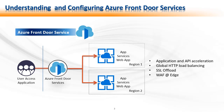If you look at the picture, when a user accesses the application, it goes to Azure Front Door Services and there it is decided which region the request should be routed to. We have two regions with App Services Web Apps — Region 1 and Region 2. If someone from close to Region 1 tries to access the application, the request is routed to Region 1 App Services Web App. Similarly, if someone from Region 2 tries to access the Web App, it is routed to Region 2 App Services Web App.